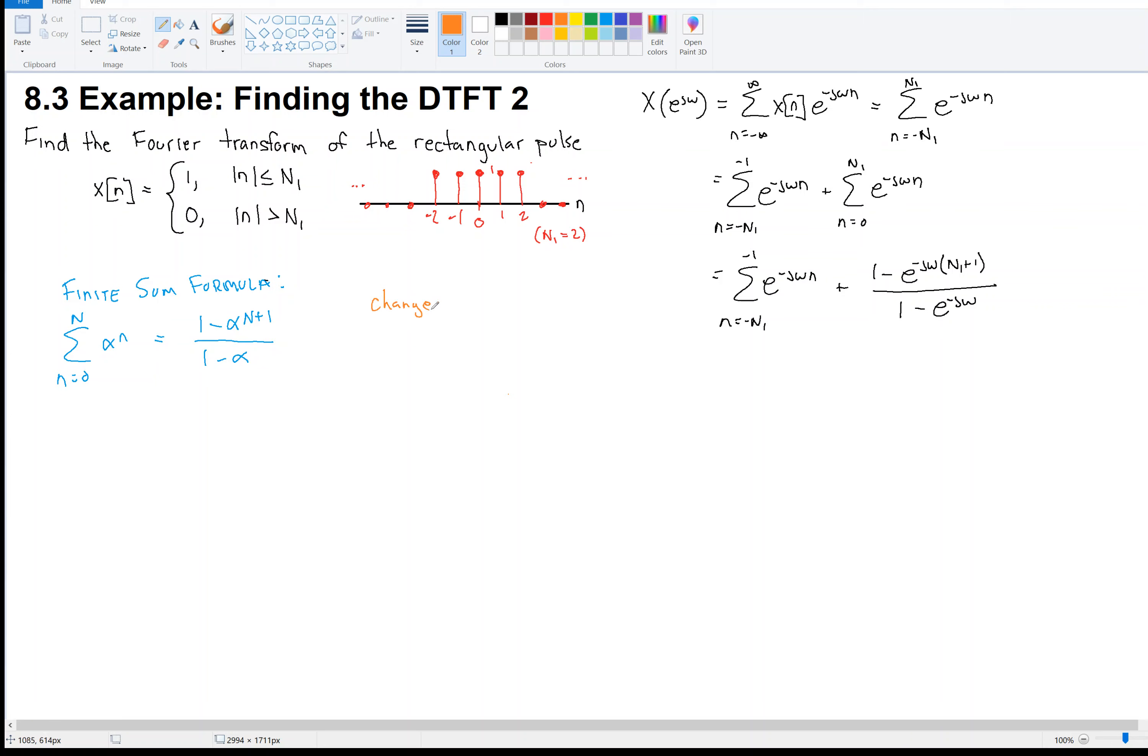Change in variables, which is a technique that we've used quite a bit in our course. And I'm going to let some other variable call it n hat equal minus n. And so now my sum would become, well, when n is minus n1, n hat is plus n1. And when n is minus 1, n hat is plus 1. E to the plus j omega n hat, right? Because when, again, we're substituting n hat for n. So that makes a minus there and that cancels with that minus.